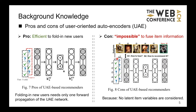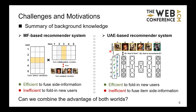The advantage of UAE-based recommender systems is that folding new users is very efficient, because the inference of user latent variables and the generation of ratings for all items can be done through only one forward propagation of the network. However, since no item latent variables are explicitly considered, it seems impossible to fuse item side information to support the recommendation of items with sparse interactions or even cold-start items. So, MF-based systems are efficient at fusing item side information but inefficient at folding new users, while UAE-based systems do the opposite. We wondered: can we combine the advantages of both and design a system efficient in both fusing item side information and folding new users?